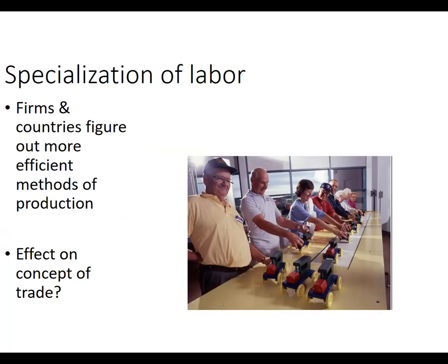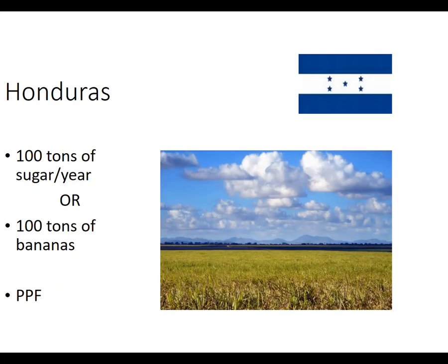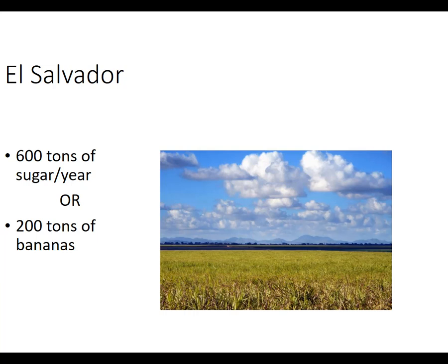Lots of applications. What happens over time is if we specialize, we can eventually get to more efficient methods of production. This is one of Adam Smith's insights: if you're on an assembly line and your job is to put on one piece all day long, you're going to think about that, become more efficient, and be able to do more. Now let's do a country example. This is Honduras. Honduras can produce 100 tons of sugar or 100 tons of bananas — that's their land, labor, and capital combination, their production possibility frontier.